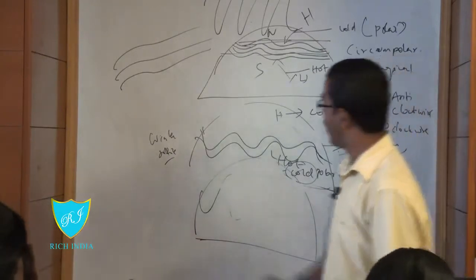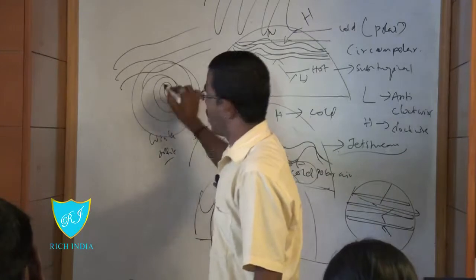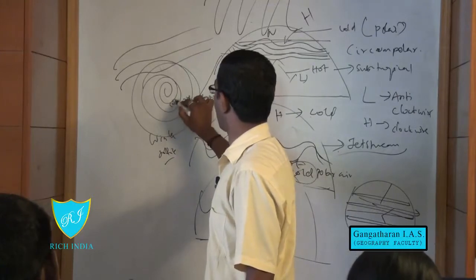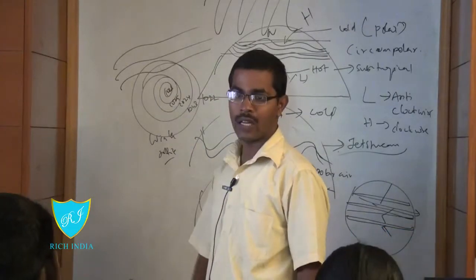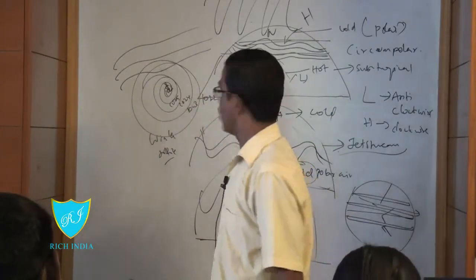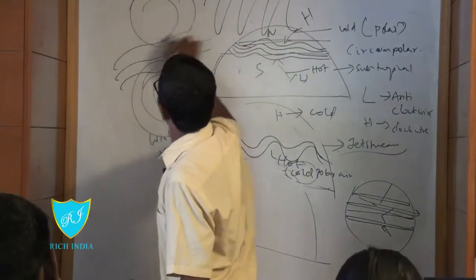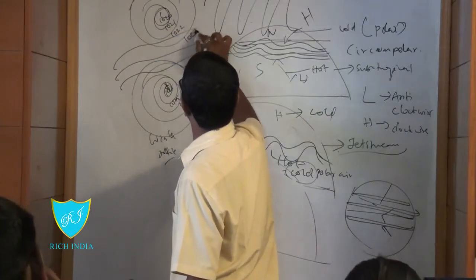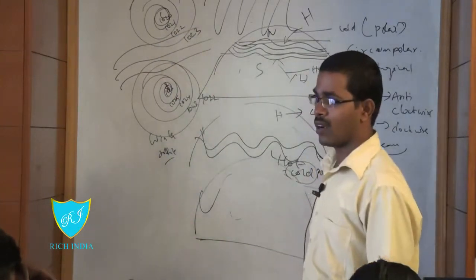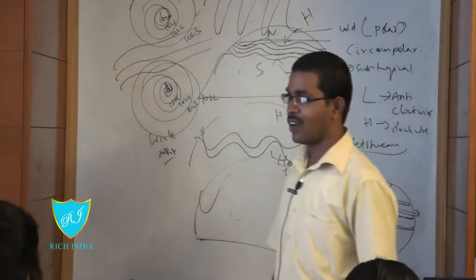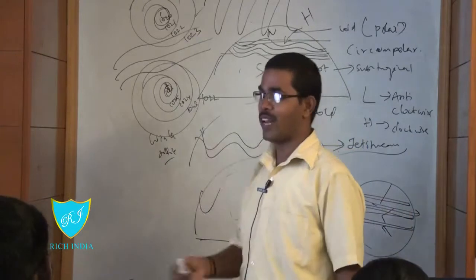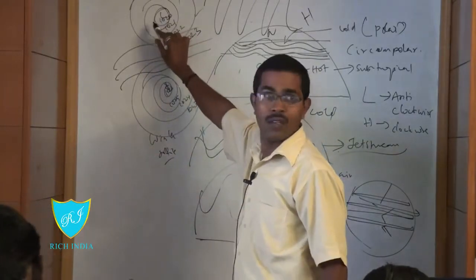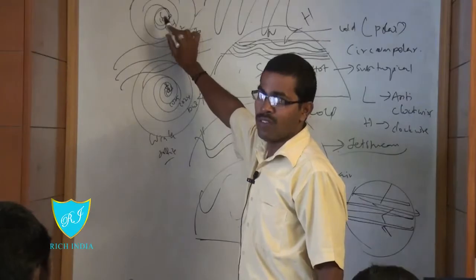To understand how we identify high and low pressure: if the pressure values at concentric lines are 1022, 1023, 1024, 1025, 1026 — the innermost being 1026 — we call that high pressure. If instead the lines read 1020, 1021, 1022, 1023 with the lowest value at the center, that is low pressure. These concentric lines are called isobars, and the center of low pressure has the lowest pressure value.